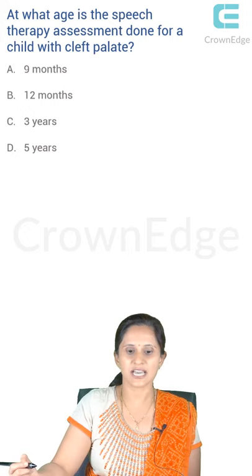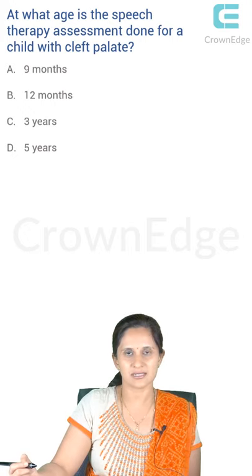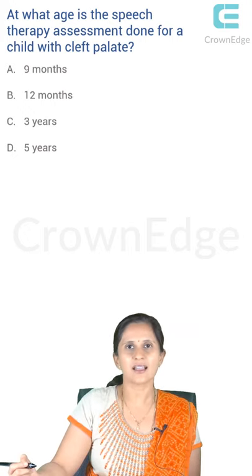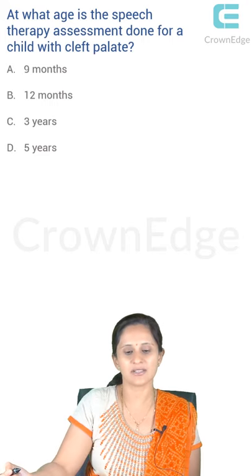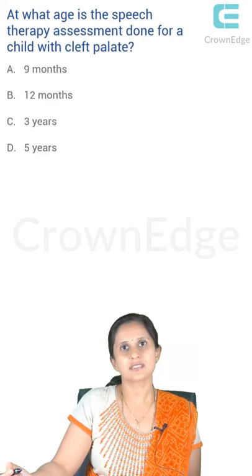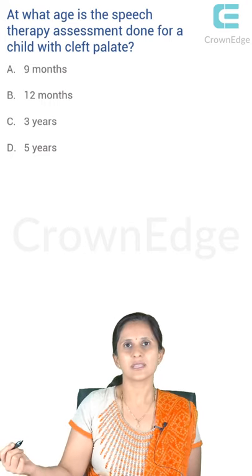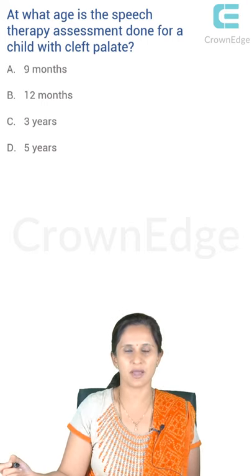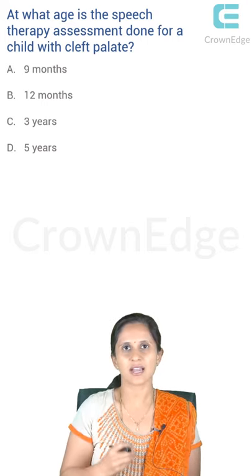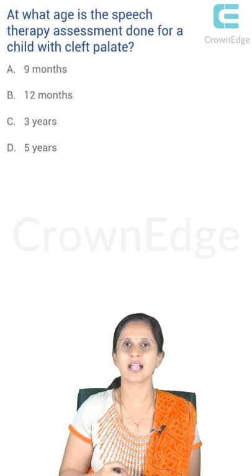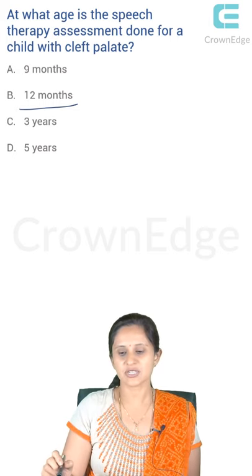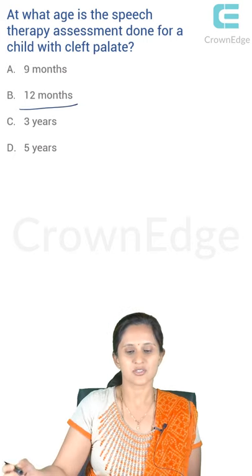At what age is speech therapy assessment done for a child with cleft palate? At nine months, the child is starting to stand and move — speech is still at a lower level. You should start speech therapy as and when the child begins speaking their first words, which normally happens around one year or 12 months of age. The first assessment of communication skill begins when the child starts to speak, which is around 12 months. So the answer is B.